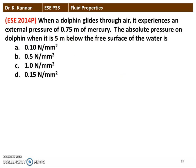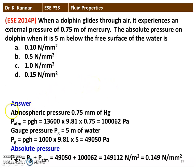Next question from the 2014 question paper. When a diver glides through water, they experience an external atmospheric pressure of 0.75 m of mercury. What is the absolute pressure on the diver when they are 5 meters below the free surface of water? We have four options, and we will calculate the correct answer.